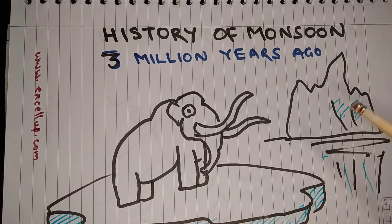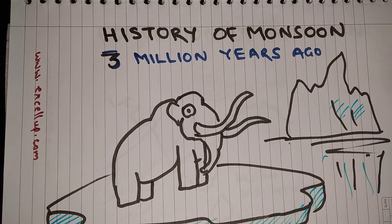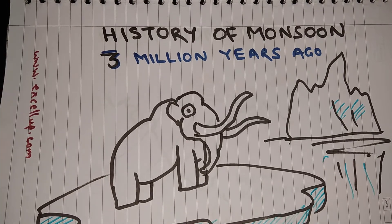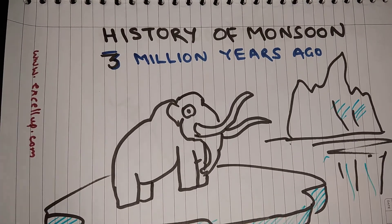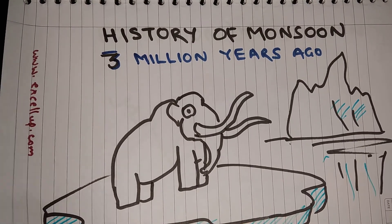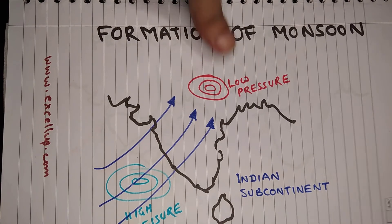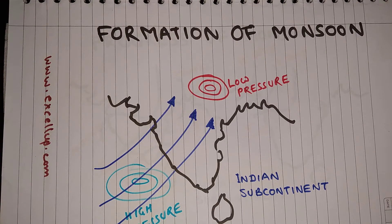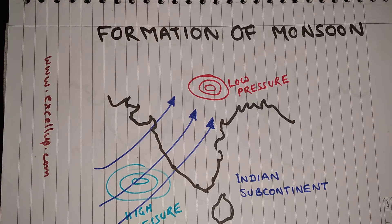The monsoon started over the Indian subcontinent around three million years ago, and this was the time when the ice age was on its last legs. You can see the woolly mammoth. Many complex geographical and scientific processes are involved in the making of monsoon.